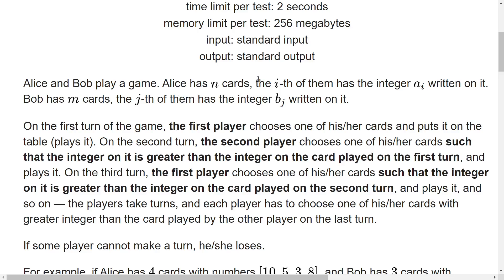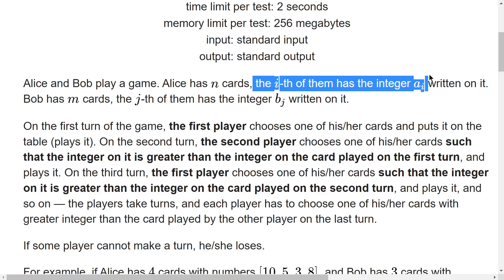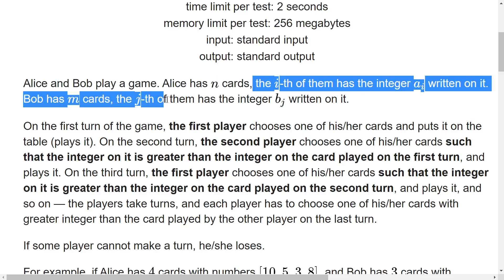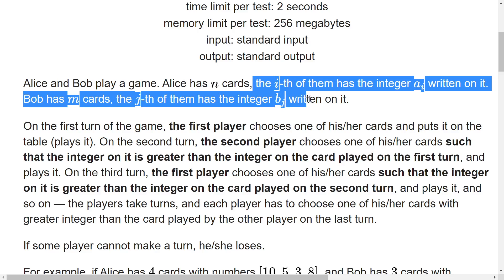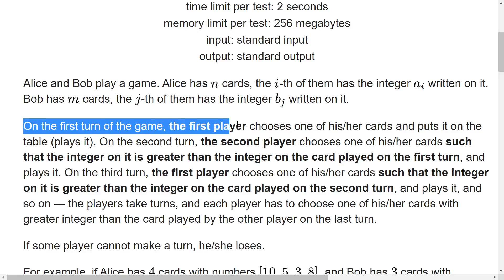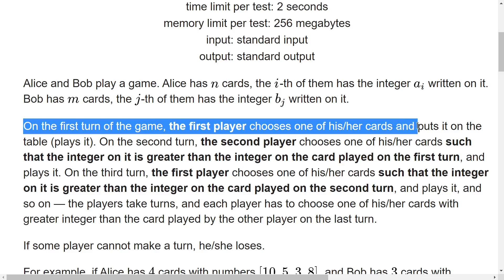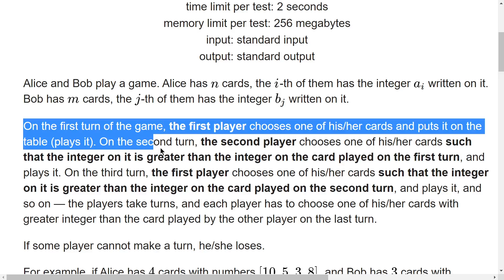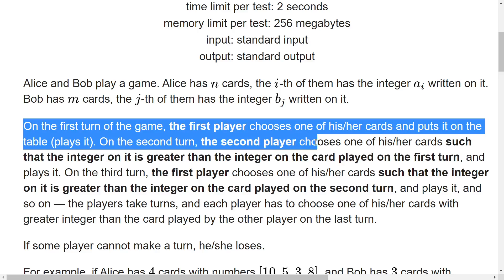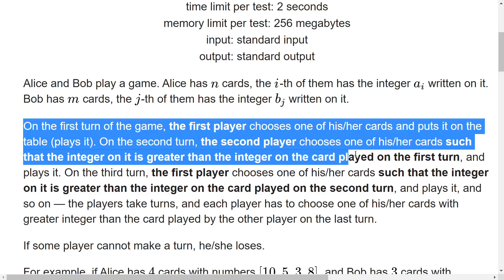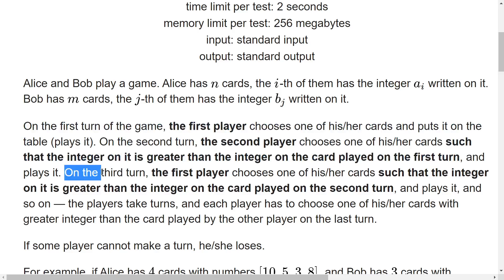The statement says that Alice and Bob play a game. Alice has N cards, the i-th of them has integer A_i written on it, and Bob has M cards, the j-th of them has integer B_j. On the first turn, the player chooses one of their cards and puts it on the table. On the second turn, the other player must choose a card with an integer greater than the one played on the first turn.